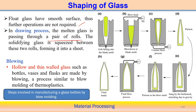Another processing technique for glass is called the blowing operation. In blowing, we can create very hollow and very thin-walled glass. For example, we can produce bottles, vases, and flasks. This kind of component can be produced using the blowing operation. It is a similar technique to what we discussed in blow molding for thermoplastic material — we use the same technique here also. The raw material, called a GOB, falls into the blank mold cavity.